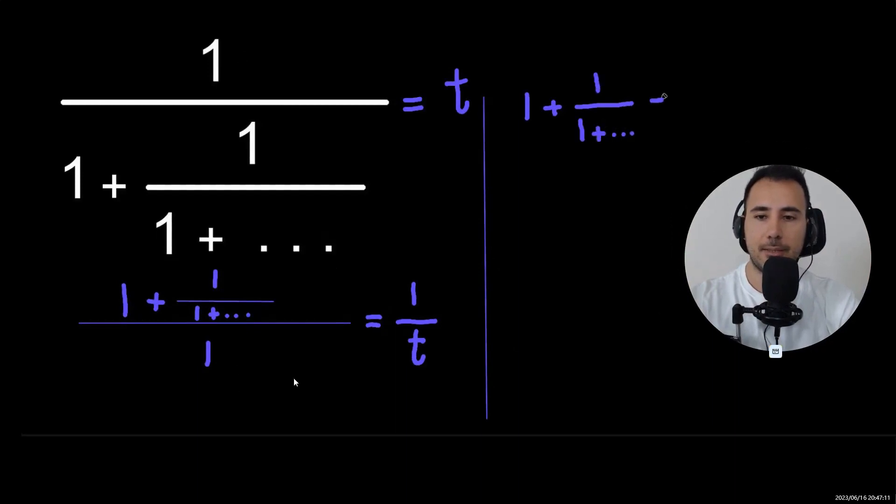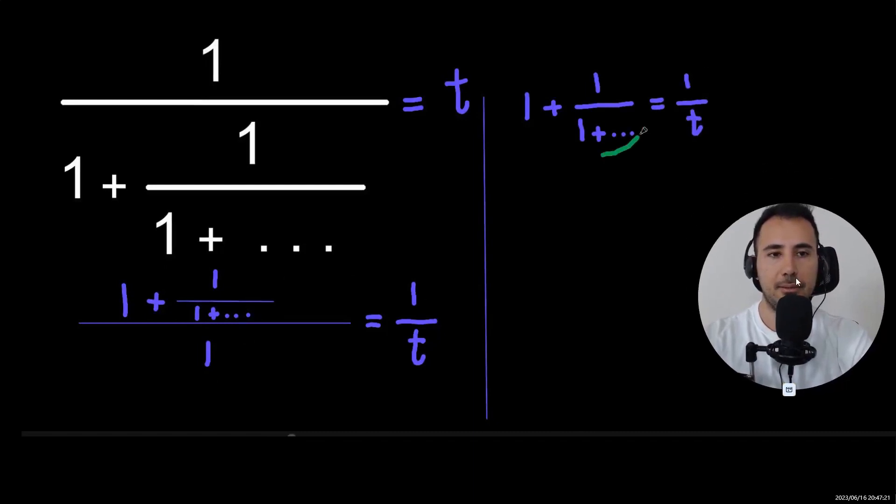Now because we had here this numerator over one, we're just going to write the numerator here equals one over T. And now this is the best part of the question. You see, now let's compare these two.